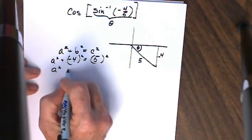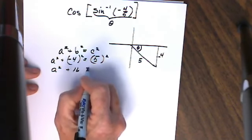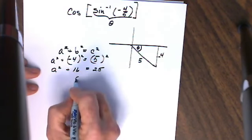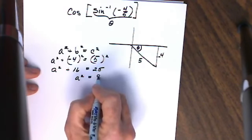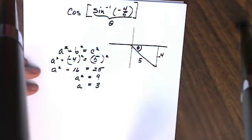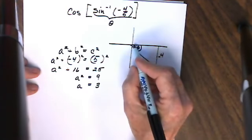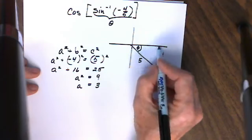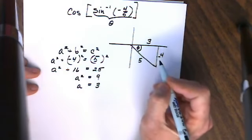A squared is equal to 16 and 5 squared is equal to 25. When I subtract 16 from both sides I get 9. The square root of 9 is 3. Is that a positive 3 or a negative 3? If I start here and I go in this direction I get a positive 3.